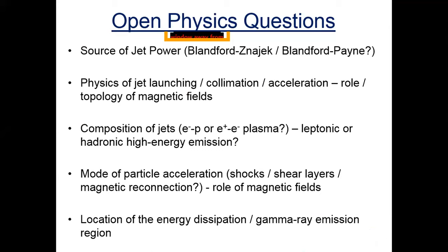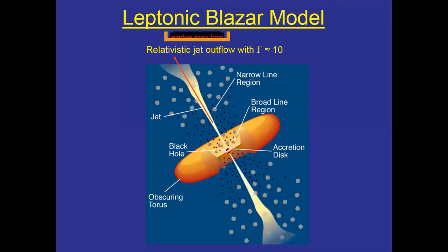The key questions are: what is the source of jet power, what drives the jets, what is the physics of jet launching — in particular the role of magnetic fields in jet launching, collimation, and acceleration — what is the composition of the jets, and what are the high-energy emitting particles: leptonic or hadronic emission scenarios? What accelerates particles — shocks, shear layers, magnetic reconnection — and what is the location of the gamma-ray emission region?